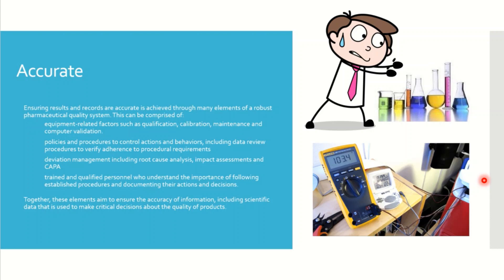The next one is Accurate. It is very critical and important that whenever you enter data, it should be accurate. The data you record from a device should give accurate readings — this depends on the qualification, calibration, maintenance, or validation of the system. If you are not capturing or getting accurate data, controls are necessary, and deviation management or incident investigation may be required.